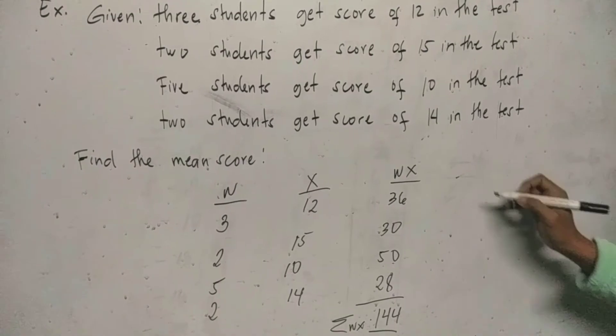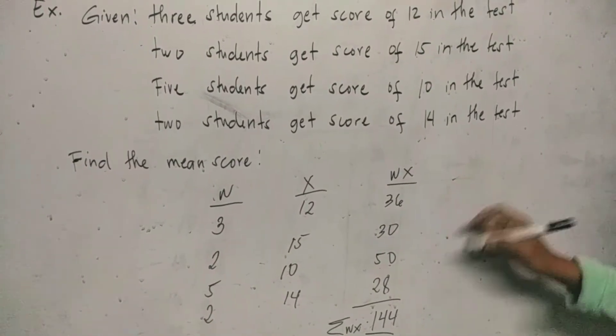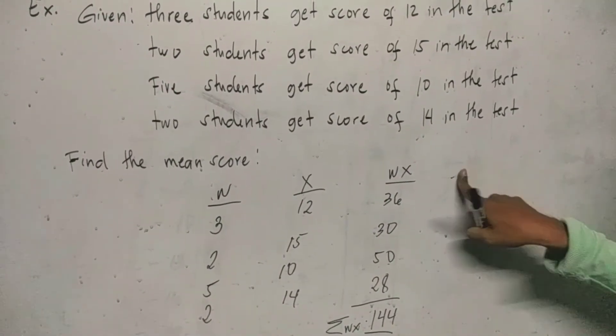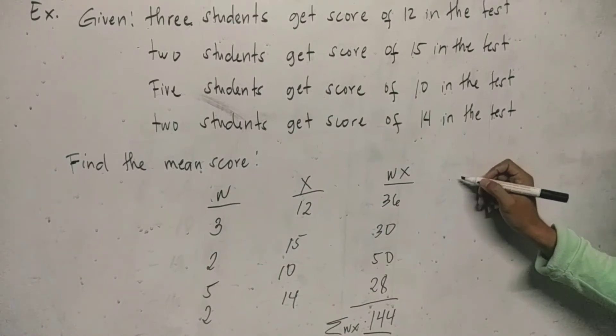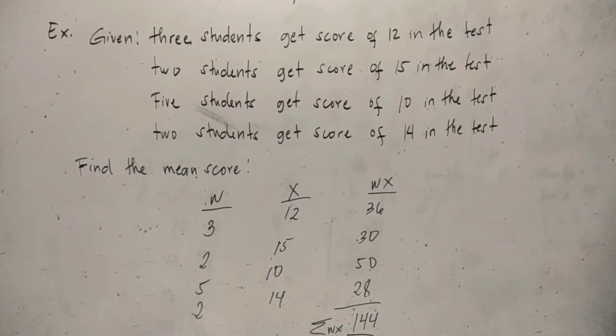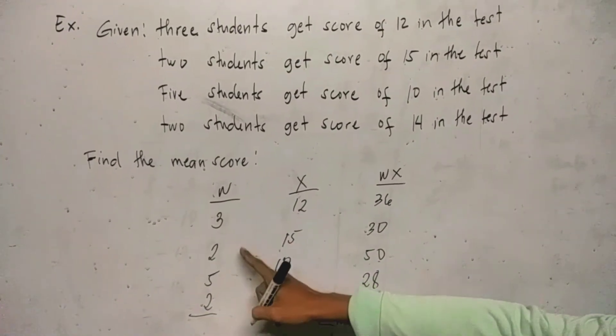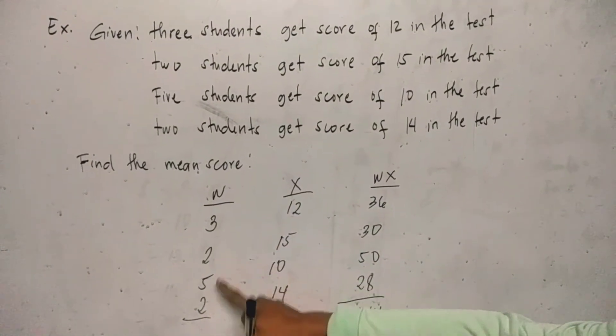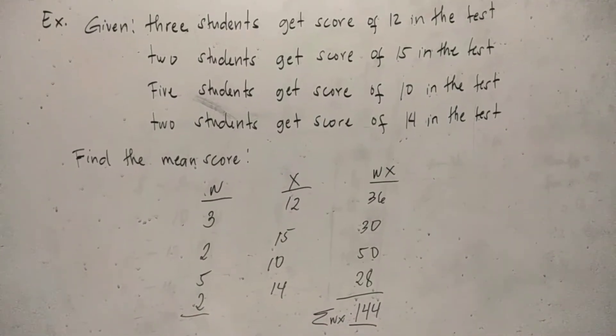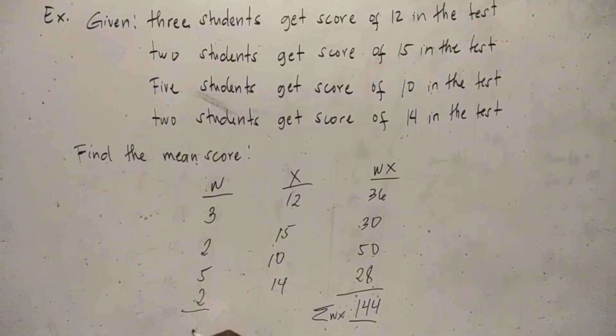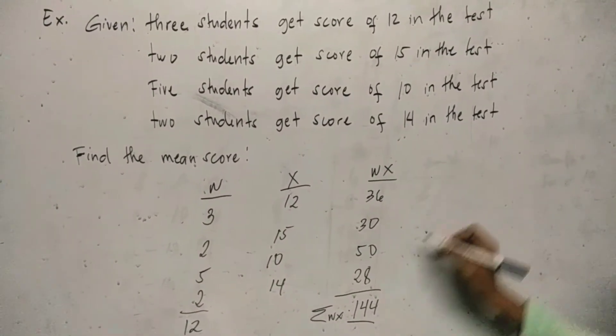By the way, we are going to add this one, the corresponding weights. We have 3 plus 2 plus 5 plus 2 is equal to 12.